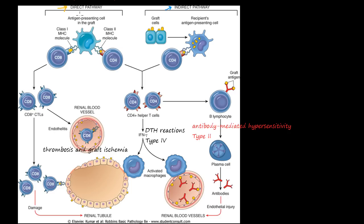In the direct pathway, there is an antigen-presenting cell in the graft. This antigen-presenting cell has major histocompatibility complex class 1 molecules — because all cells have this — and also major histocompatibility complex class 2, which is only on antigen-presenting cells like macrophages, dendritic cells, monocytes, and neutrophils. Remember that CD8 T cells correspond with class 1, and CD4 T cells communicate with class 2.